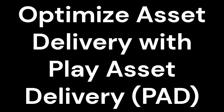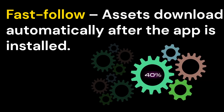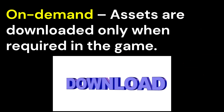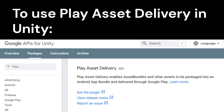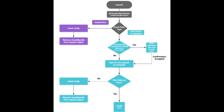Optimize Asset Delivery with Play Asset Delivery (PAD). Play Asset Delivery allows you to deliver large game assets efficiently using three different delivery modes: Install Time — assets are included in the initial download; Fast Follow — assets download automatically after the app is installed; On Demand — assets are downloaded only when required in the game. To use Play Asset Delivery in Unity, install the Google Play Asset Delivery package from the link provided in the description below, and tag Asset Bundles with the appropriate delivery mode in the Unity Editor.